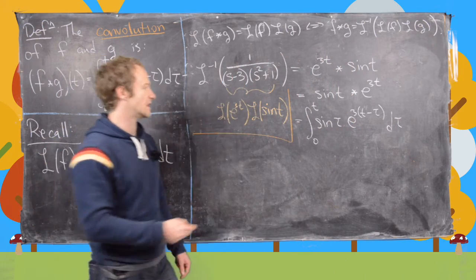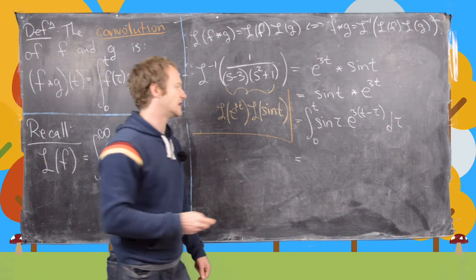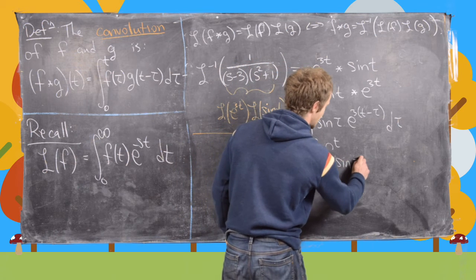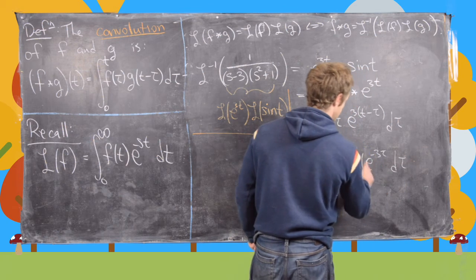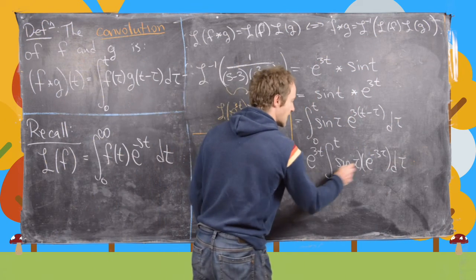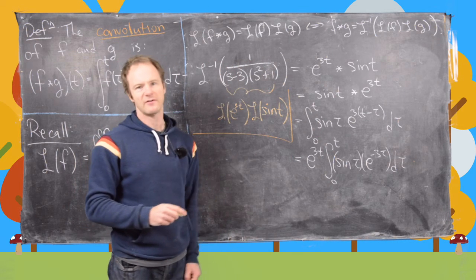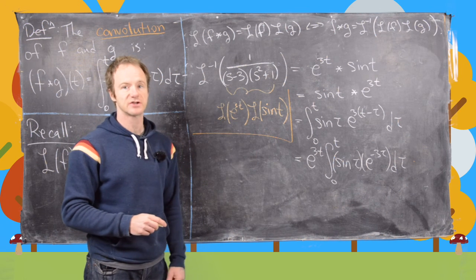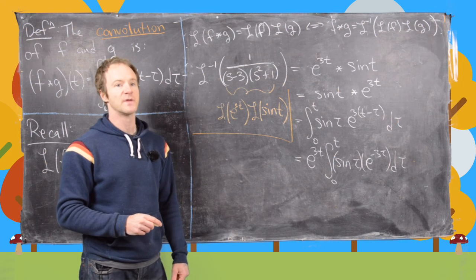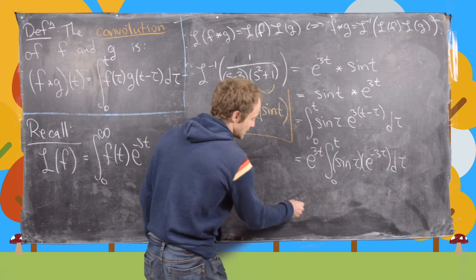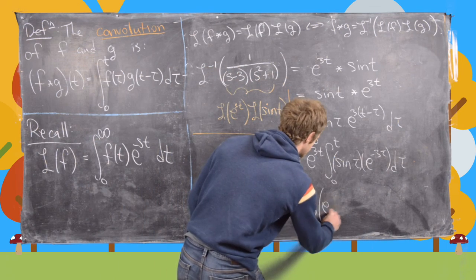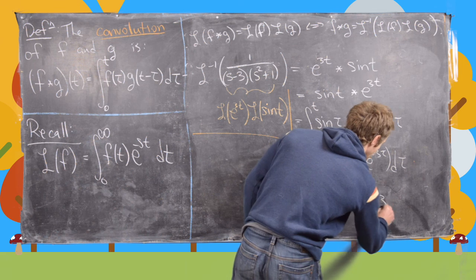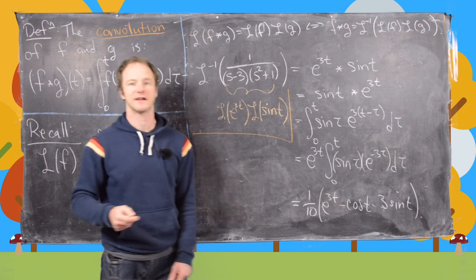We can split the exponential and factor e to the 3t out front, giving e to the 3t times the integral from zero to t of sine of tau times e to the minus 3 tau d tau. This is a lengthy integration by parts problem — you need to integrate by parts twice, ending up back with the same integral, then solve algebraically. The final answer is 1 over 10 times e to the 3t times the quantity negative cosine t minus 3 sine t.